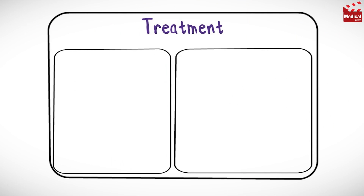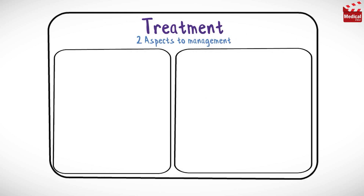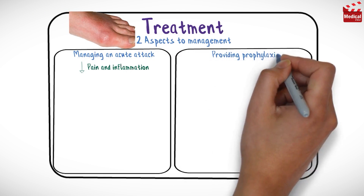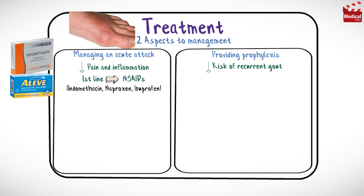Finally, let's talk about the treatment of gout. There are two aspects to management: firstly, managing an acute attack to decrease pain and inflammation when the patient has a red, hot, swollen joint; and secondly, providing prophylaxis to reduce the risk of recurrent gout. During an acute attack, the first-line treatment is non-steroidal anti-inflammatory medication, such as indomethacin, naproxen, or ibuprofen, used to reduce pain and inflammation.